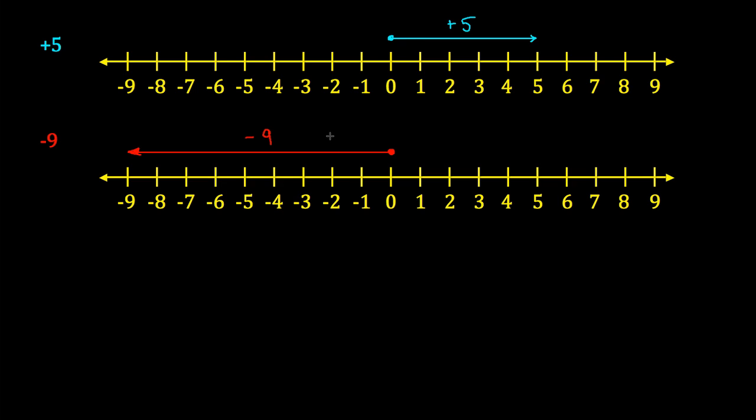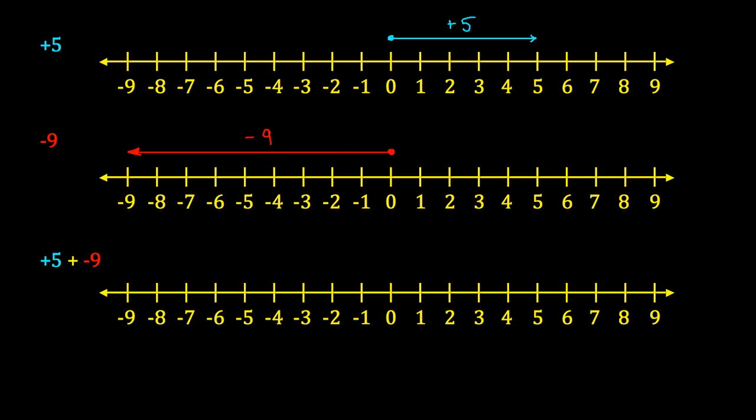Now what I'd like to do is try and put the two together. And this is what I mean by basic arithmetic. And it's going to look like this. So I would like to see if I can calculate or figure out what happens when we take a positive 5 and to it we add negative 9.